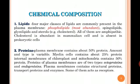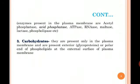According to the chemical composition, the main components of the cell membrane are the lipids, followed by proteins and carbohydrates. Carbohydrates are present only in the plasma membrane and are present at the exterior or polar end of the phospholipids at the external surface of the plasma membrane.